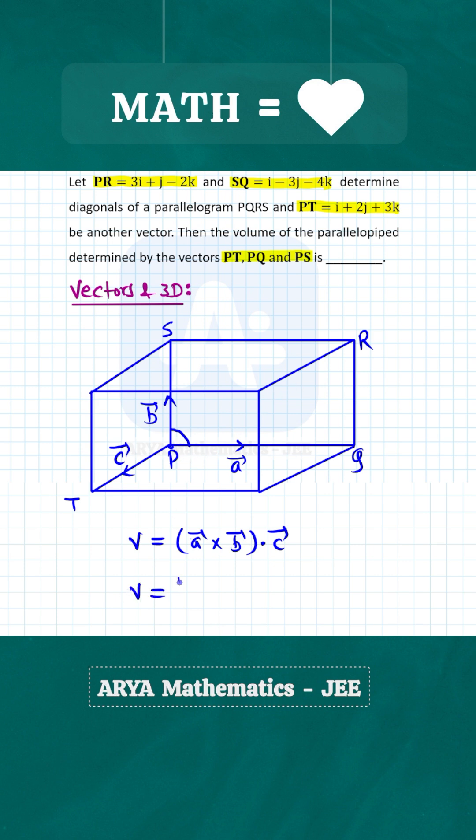So in that case, the formula for volume of parallelepiped is half of D1 cross D2 dot C, where D1 and D2 are these two diagonals. For example, D1 you can take PR and D2 you can take SQ. So this is the formula for volume of parallelepiped if diagonals are given.